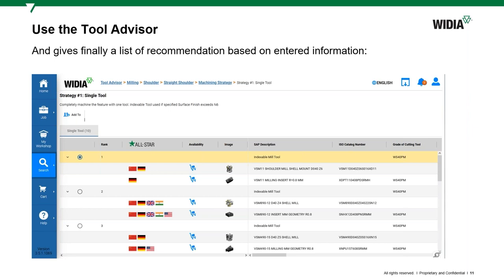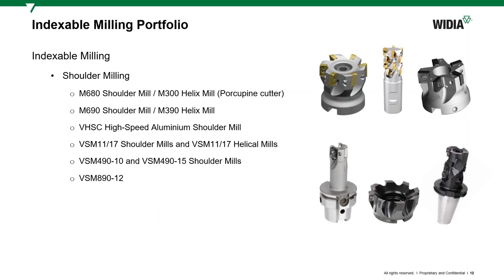Now that we know how to find a tool, I'll show you some of our tools and try to explain what specific benefits or features will guide you to the best one for your operation. We have a lot of main families: M680, M690, our high-speed aluminum shoulder mill VHSC, our very versatile VSM 11/17 platform, VSM 490, and VSM 890. With all of these you can do shoulders, but when it comes to more specific things, you need to understand why each is best for which kind of operation.